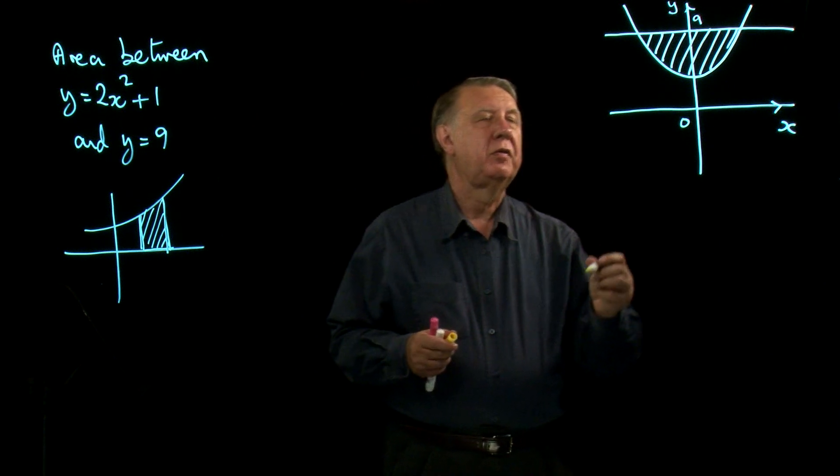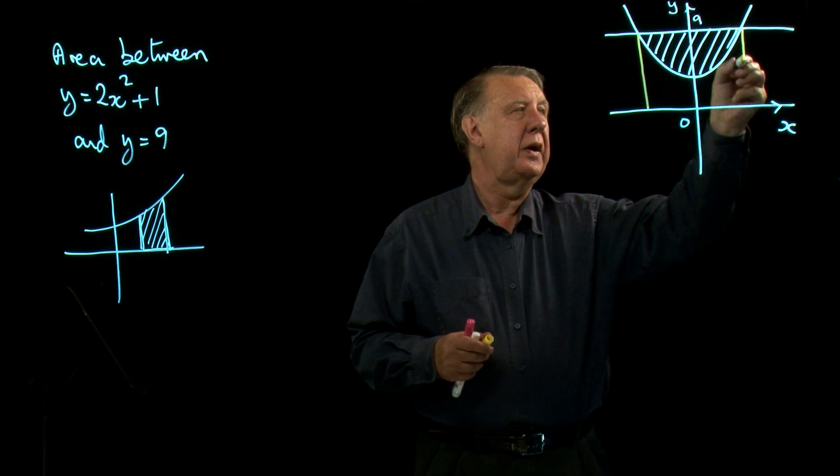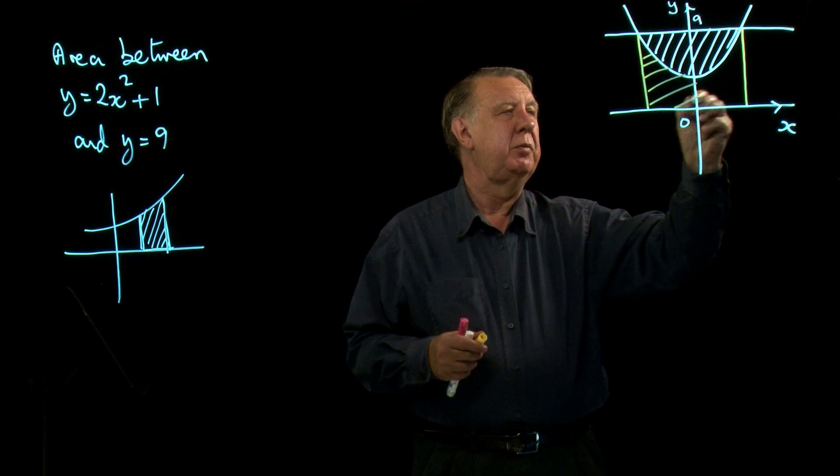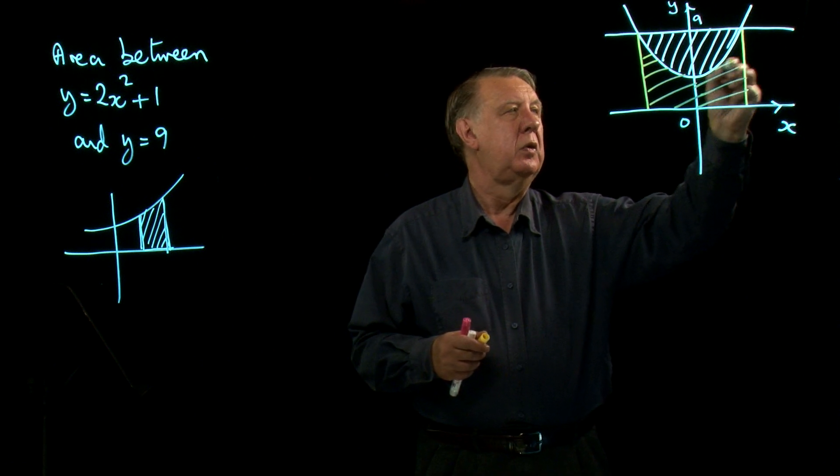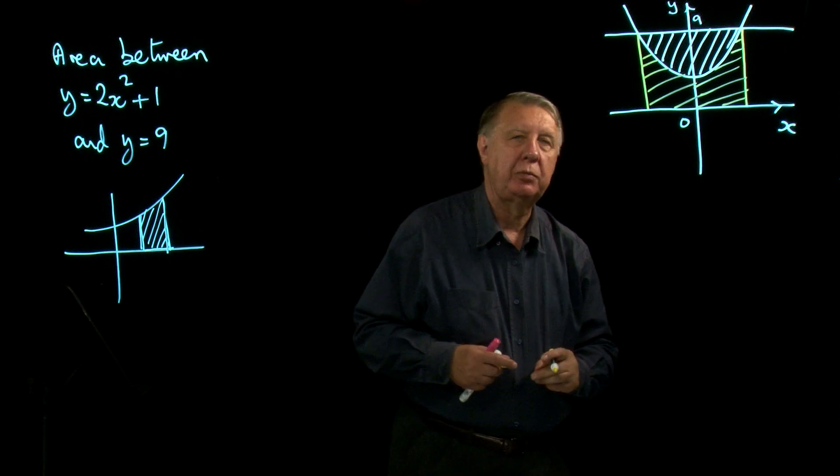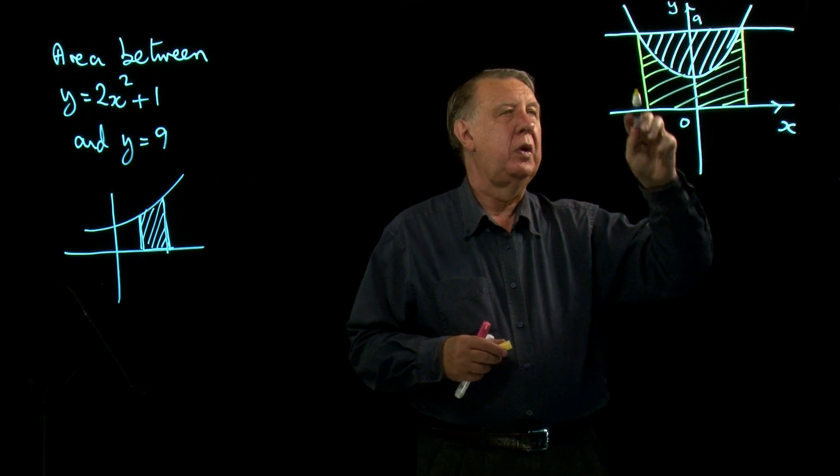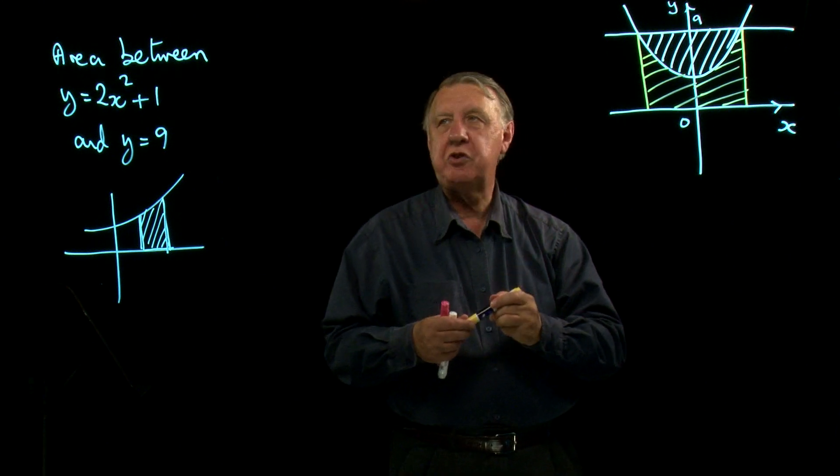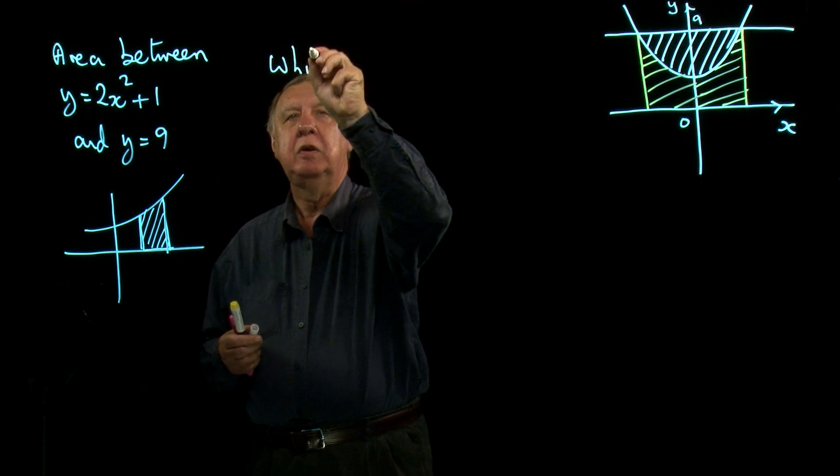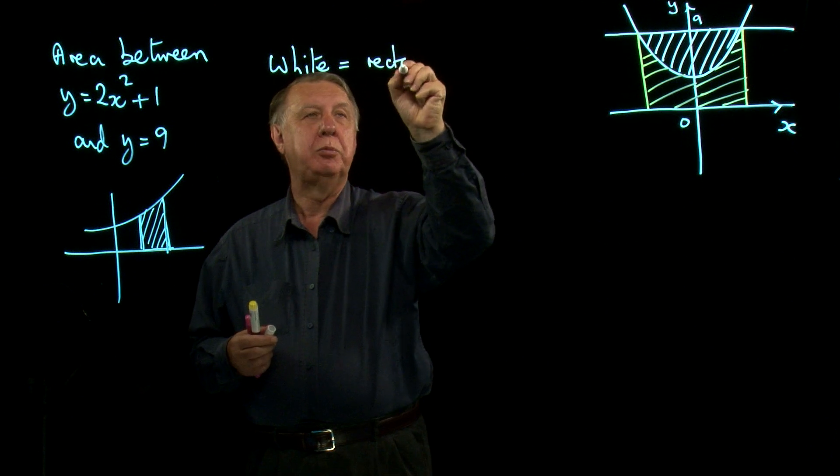But of course very easily we can make it to do with the x-axis by thinking about this area here. Because the yellow area and the white area make up a rectangle. So the white area, which is the area I'm trying to find, equals the rectangle minus the yellow.